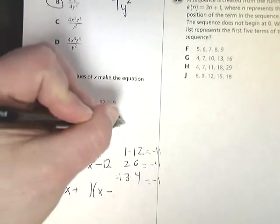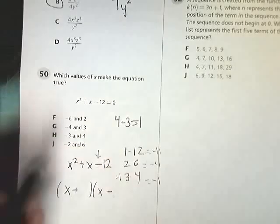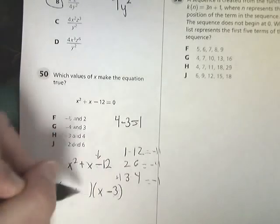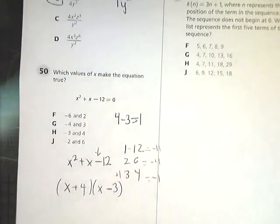And because I know that 4 minus 3 equals 1, I'm going to put that minus, or the 3, right after the minus. And the 4 right there. So that would work it back out.